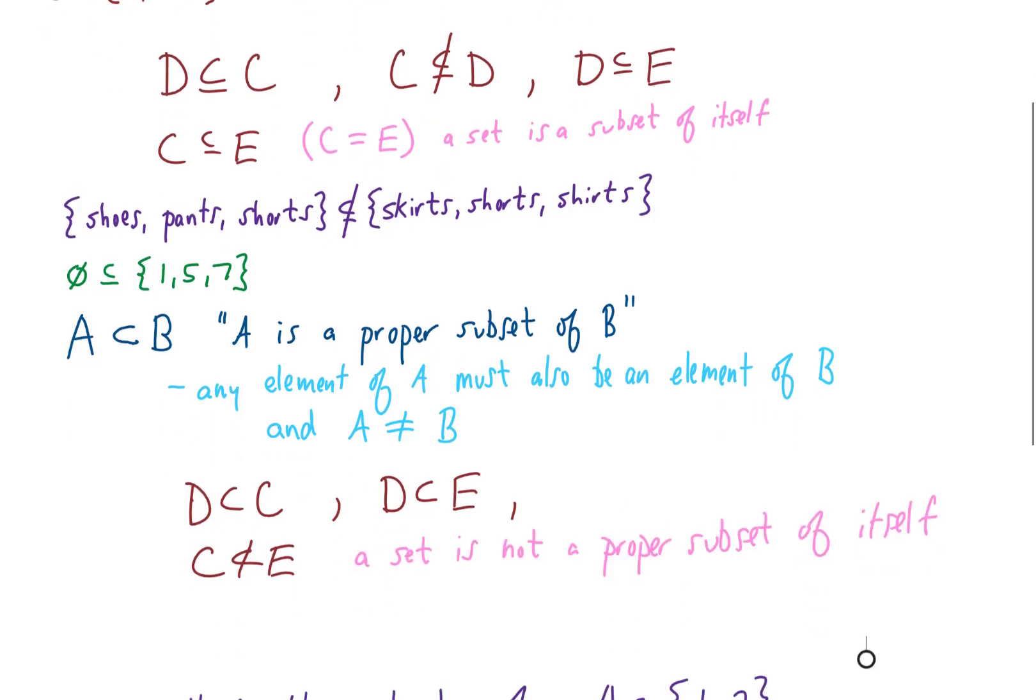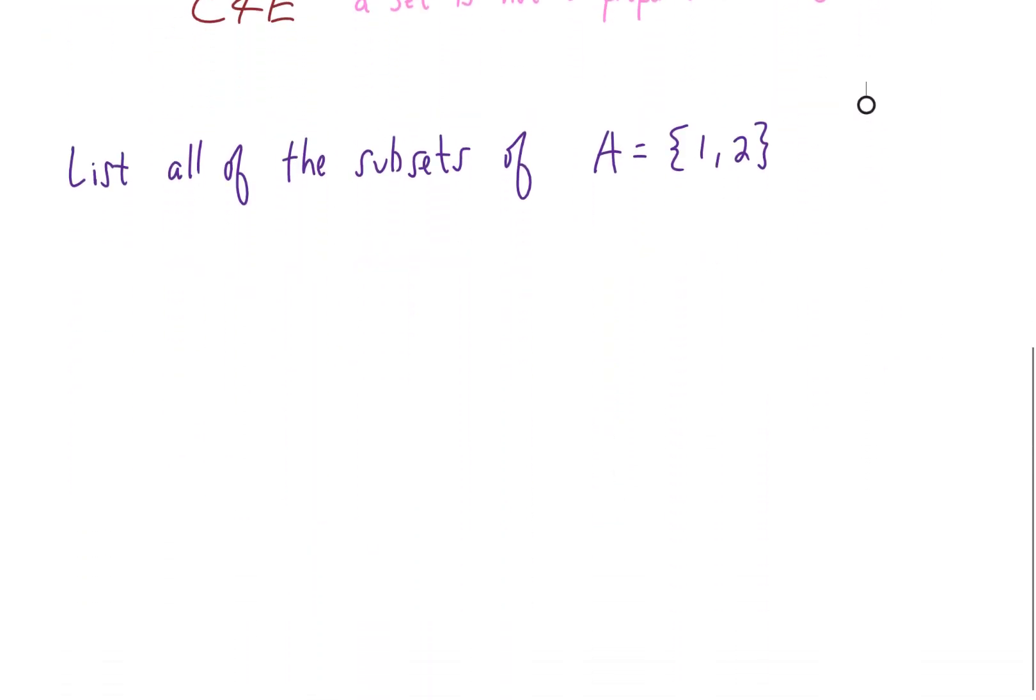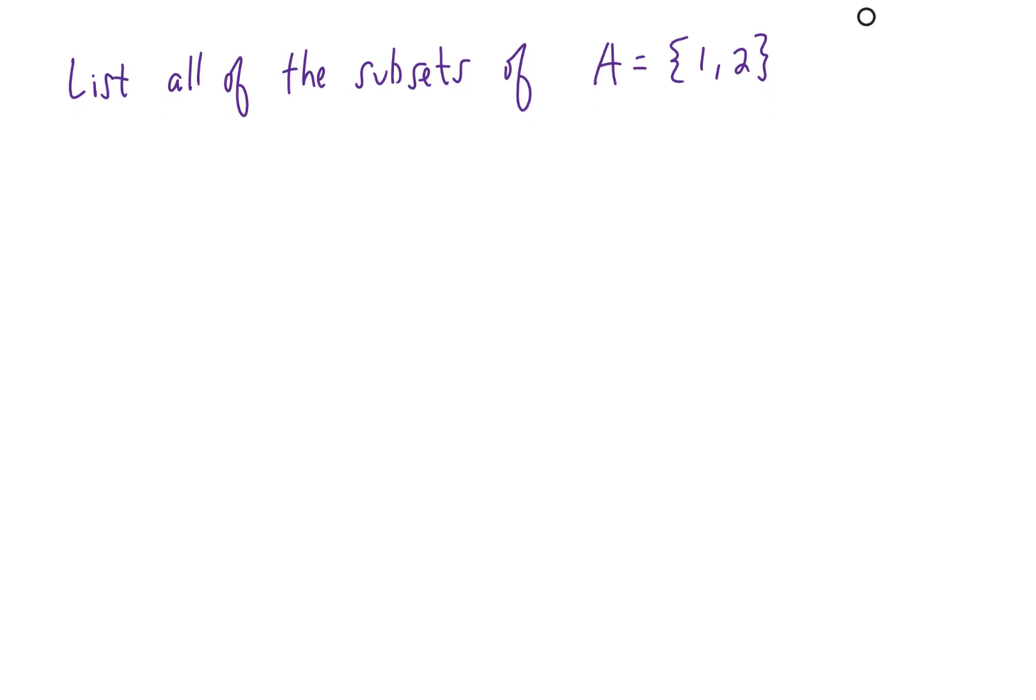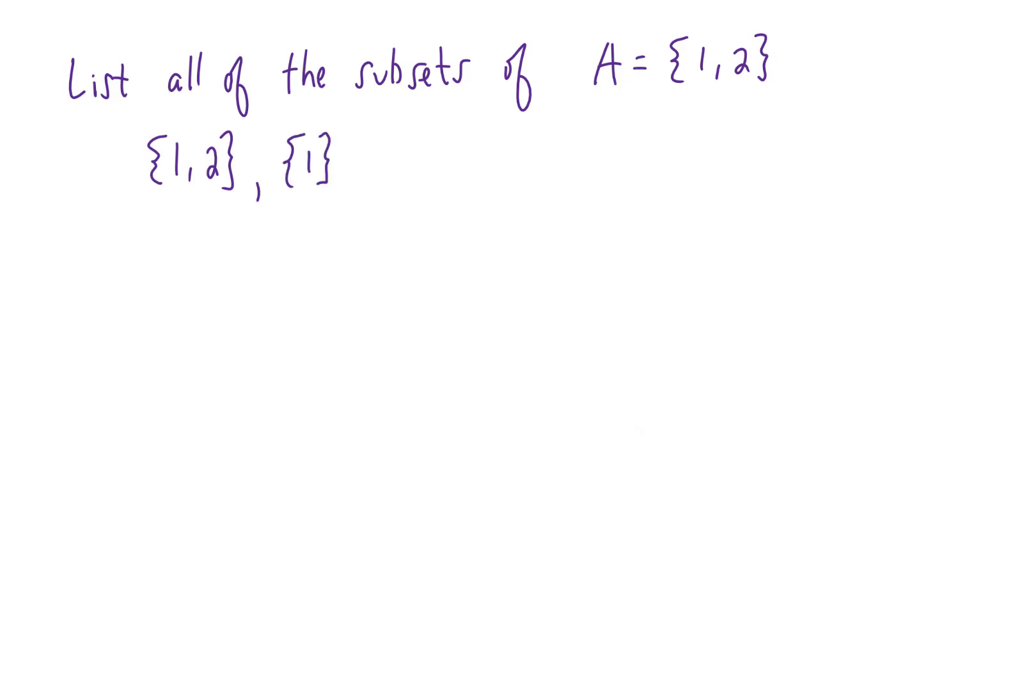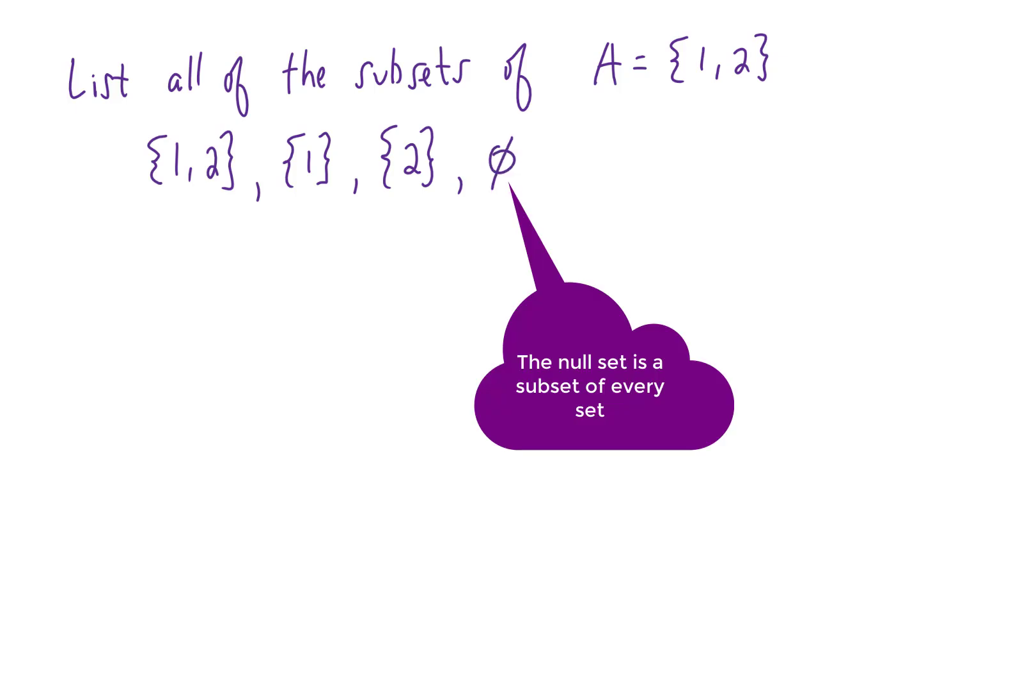To get a little bit more practice with sets, let's do the following example. Let's list all of the subsets of A, which is the set containing 1 and 2. Well, let's do it. So this set here, 1, 2, is a subset of A. Another example of a subset of A would be the set just containing 1. Another would be a set just containing the number 2. And there's one more, though it's kind of tricky. A minute ago, I said that the null set is a subset of every set. So one more subset of A is the null set.